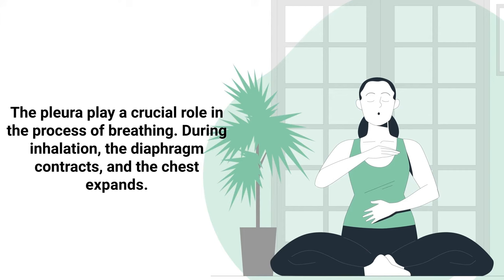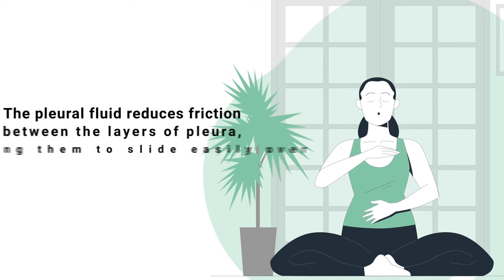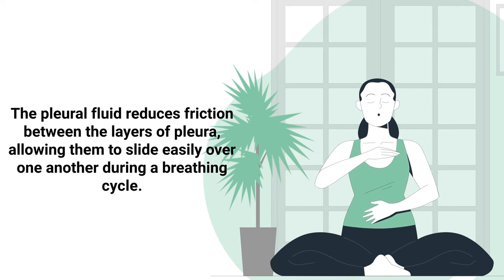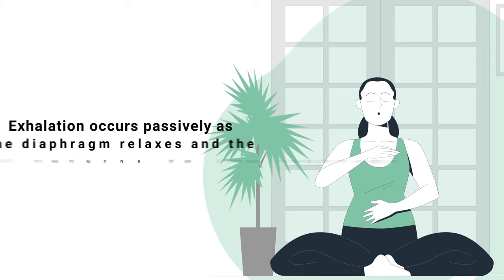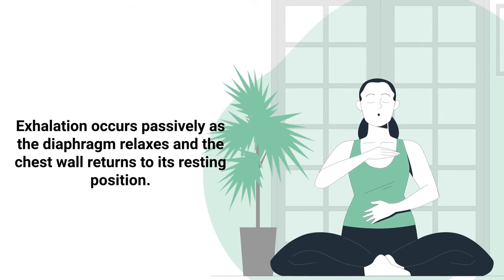The pleura play a crucial role in the process of breathing. During inhalation, the diaphragm contracts and the chest expands. The pleural fluid reduces friction between the layers of pleura, allowing them to slide easily over one another during a breathing cycle. Exhalation occurs passively as the diaphragm relaxes and the chest wall returns to its resting position.